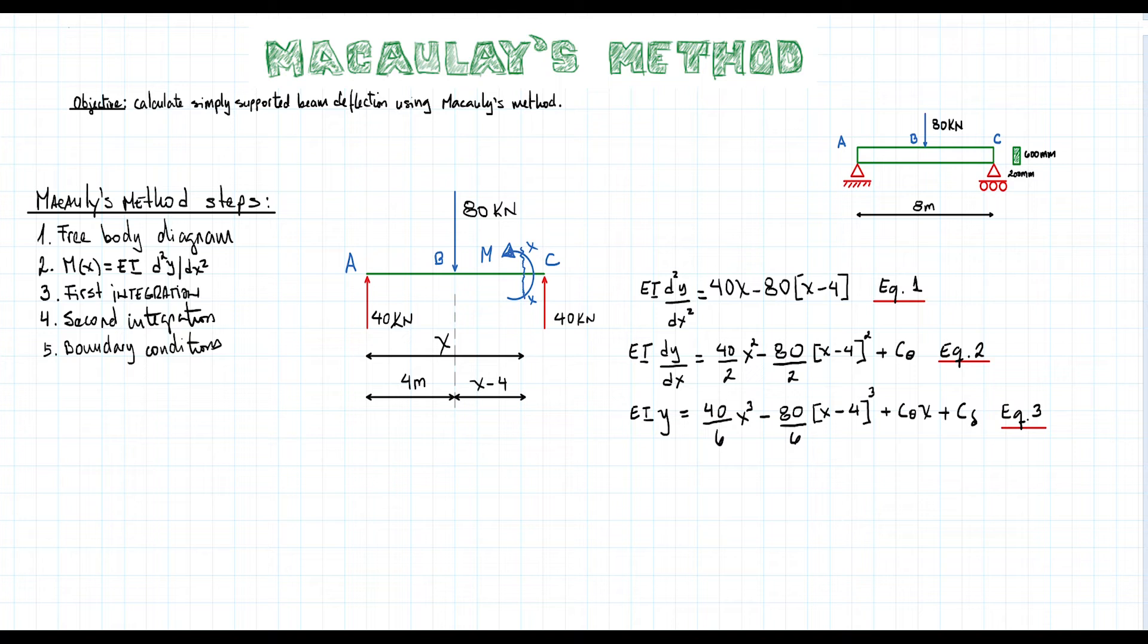Support A, located at x equals 0, have a 0 deflection or y equals 0. Support C, located at x equals 8, also has a 0 deflection. Using the first boundary condition, we find that C_δ equals 0. And doing the same with the second boundary condition, we find that C_θ equals minus 320. Let's not forget that both constants are expressed in kilonewtons.